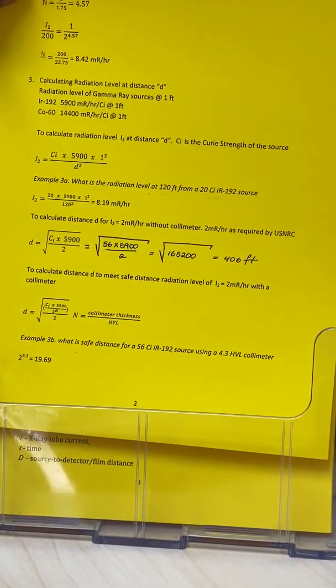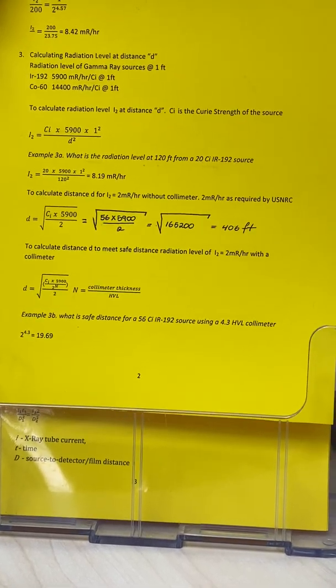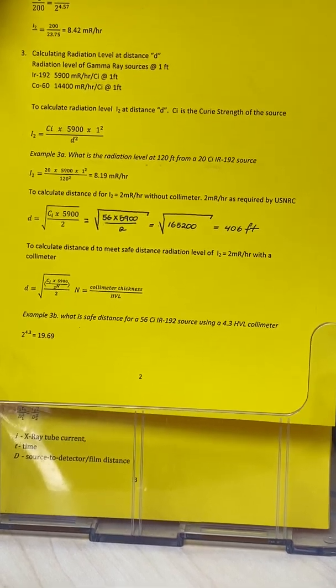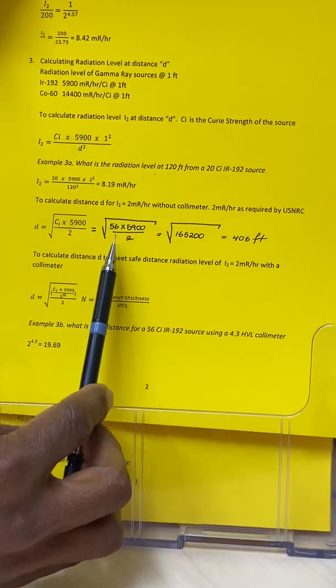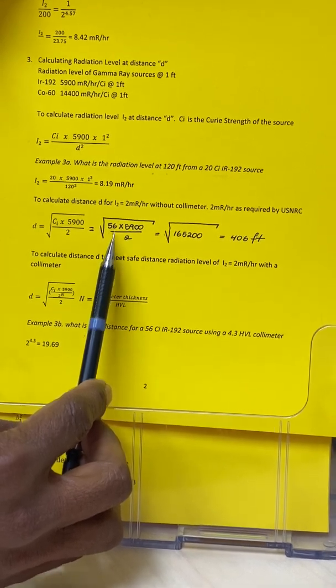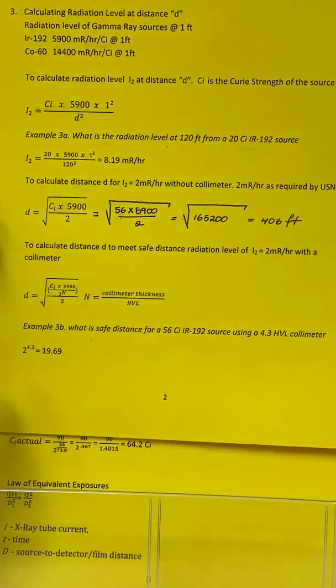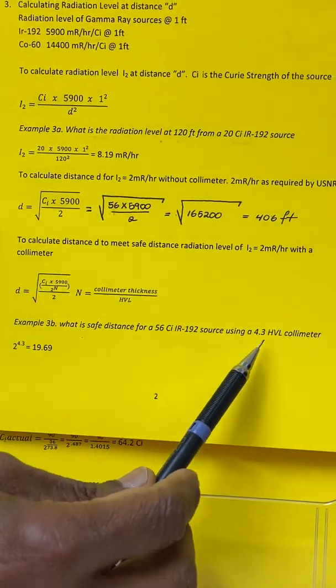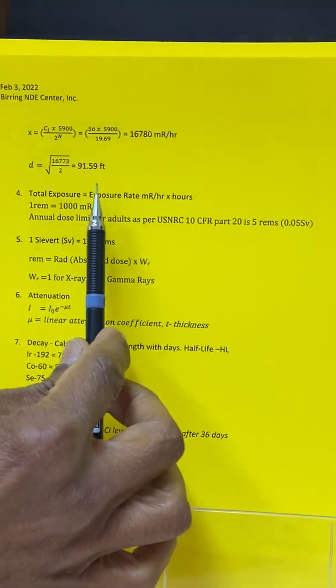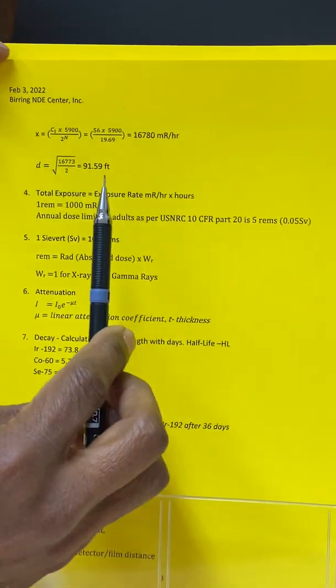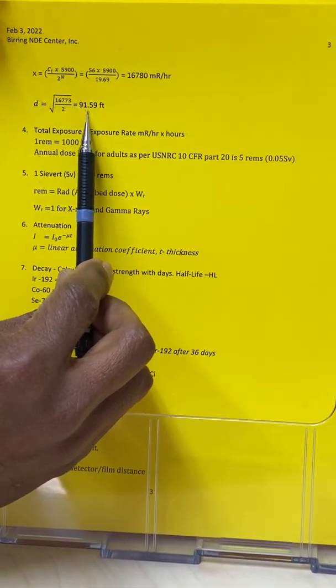The collimator actually attenuates the radiation. Whenever we use a collimator, it will give you the half value layer thickness of the collimator. If the collimator thickness is one half value layer, then this 56 will drop to 28. If it is two half value layers thick, it will drop to 14. Here is an example where the collimator thickness is 4.3 half value layers. If we use a collimator with 4.3 half value layers, then this 406 feet distance will become 91.59 feet. You see a big difference in the safe working distance—it drops from 400 feet to 91 feet.